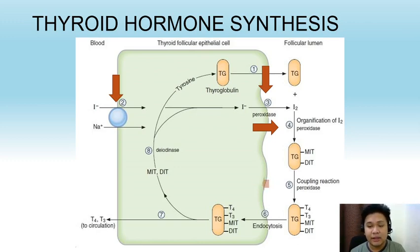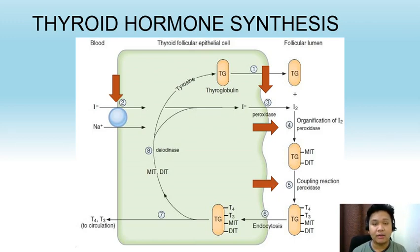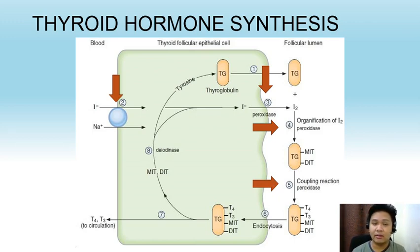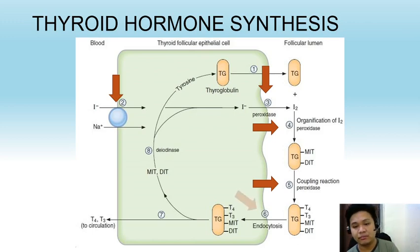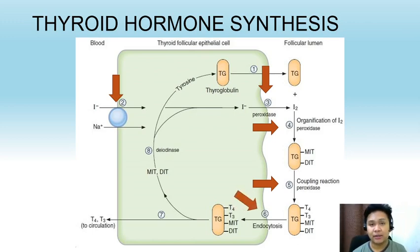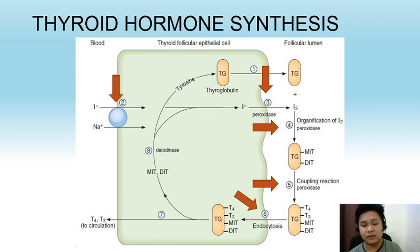MIT and DIT can now undergo the process of coupling. In coupling, MIT and DIT combine together to form T3, whereas two DIT molecules can combine together to form T4. T3 and T4 are then stored in the thyroid gland, and once they are needed, they are released from the thyroid gland through the process of endocytosis.